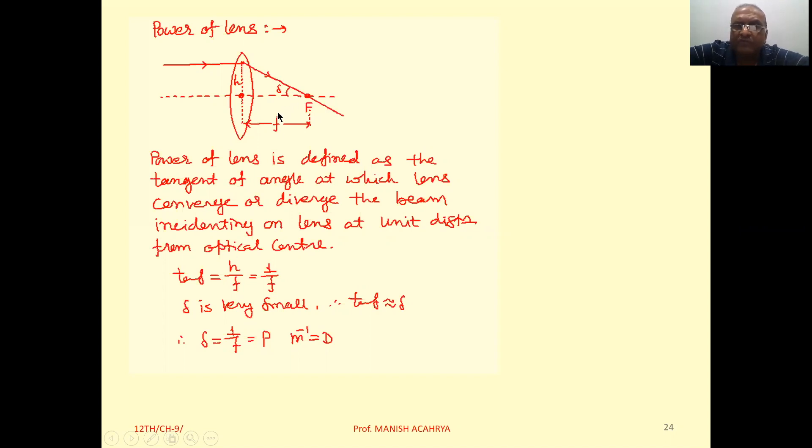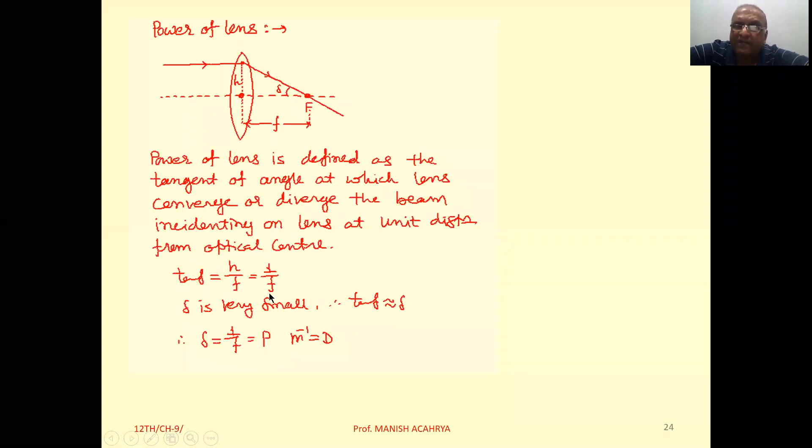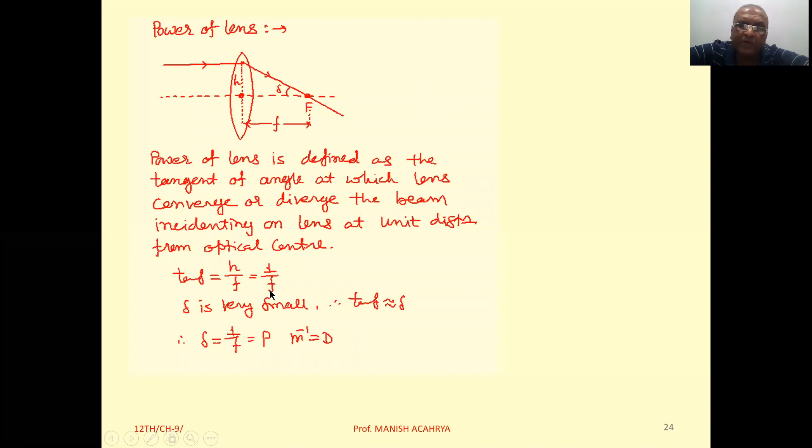So from figure, we can write tan delta that is h by f. But as per definition, this h that is unit distance. So we can write tan delta that is 1 upon f.